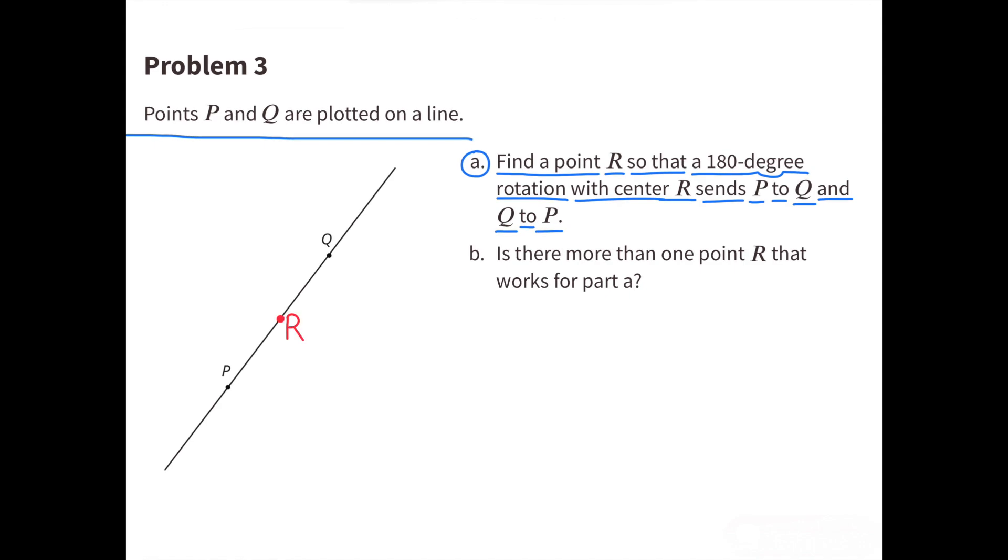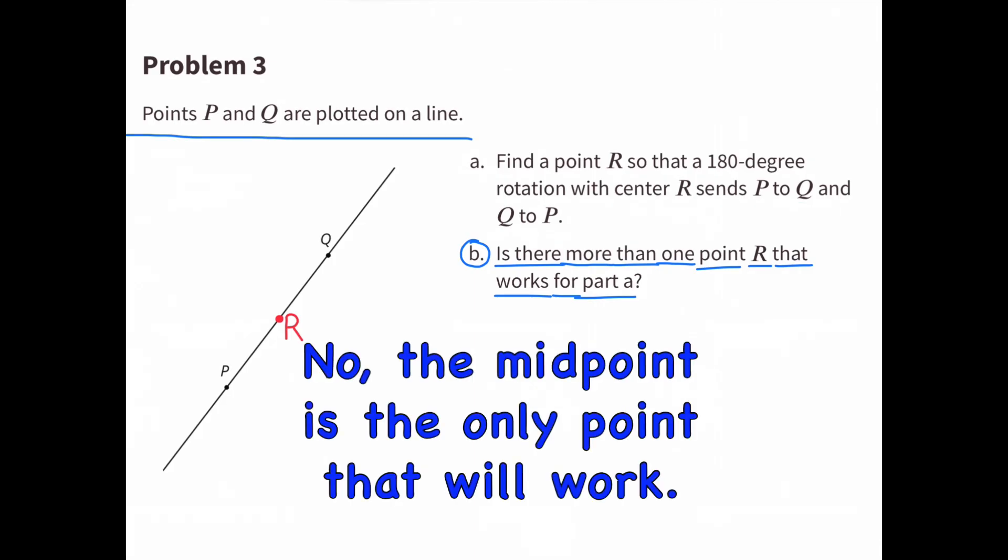The middle point will be the location for R. It's as if it's the axle and you spin a propeller. Q would go where P is and P would go where Q is. B. Is there more than one point R that works for part A? No, the midpoint is the only point that will work.